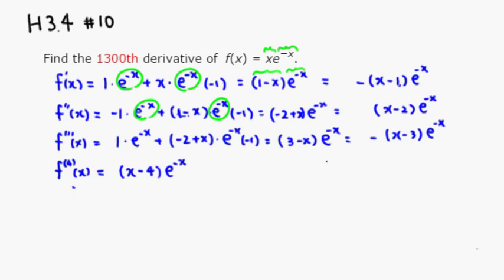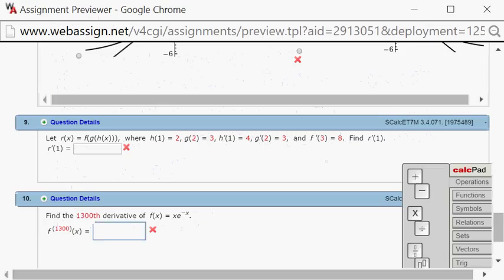Following this pattern for the 1,300th derivative: since 1,300 is even, the sign is positive. The constant follows the derivative number, so it becomes minus 1,300. Therefore, the 1,300th derivative is (x minus 1,300) times e to the negative x.